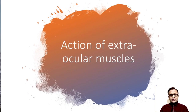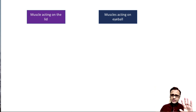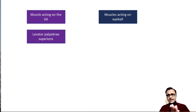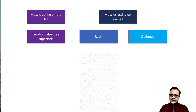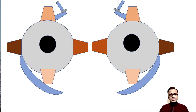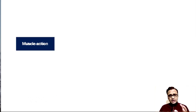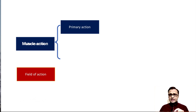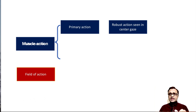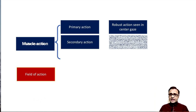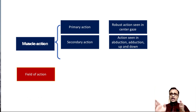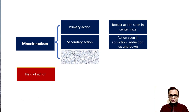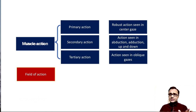Coming to the action of extraocular muscles, the extraocular muscles are divided into muscles acting on the lid — that is levator palpebrae superioris — and muscles acting on the eyeball, which are four recti and two oblique muscles. We need to understand two things: muscle action and field of action. Muscle action is divided into three types: primary action, which is a robust action seen in center gaze; secondary action, seen in abduction or adduction, elevation or depression; and tertiary action, seen in oblique cases.